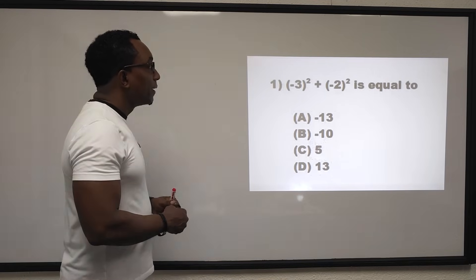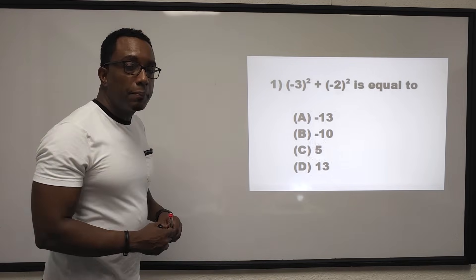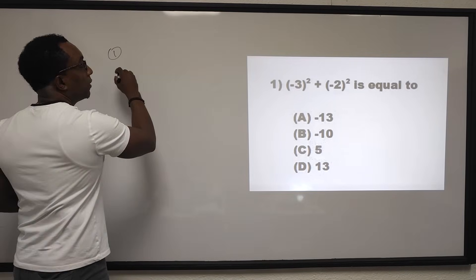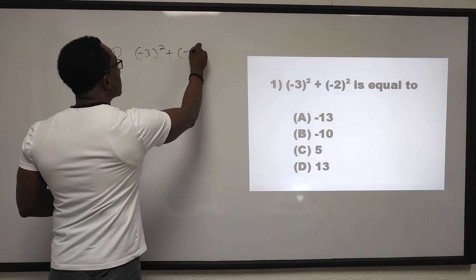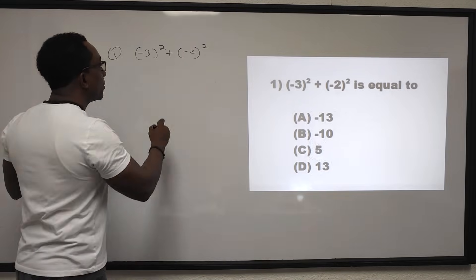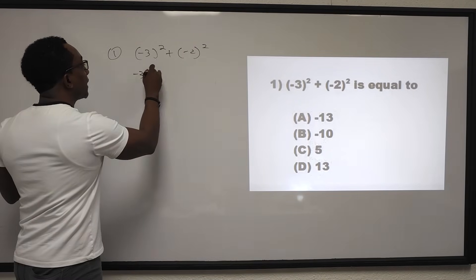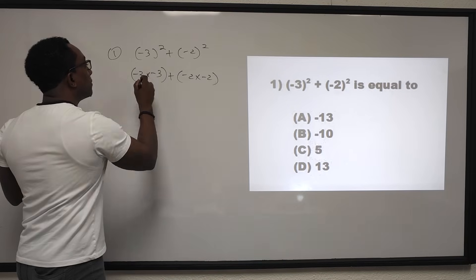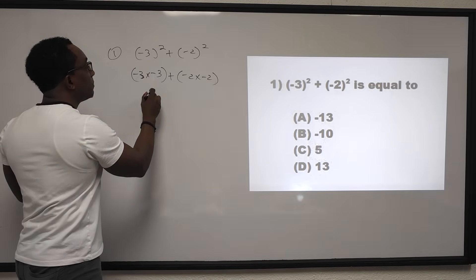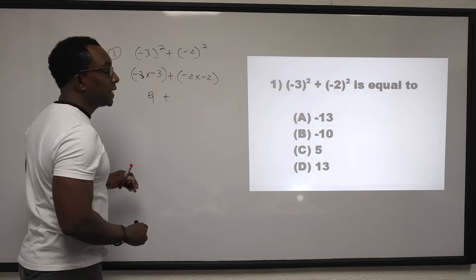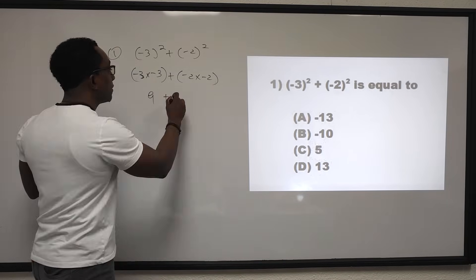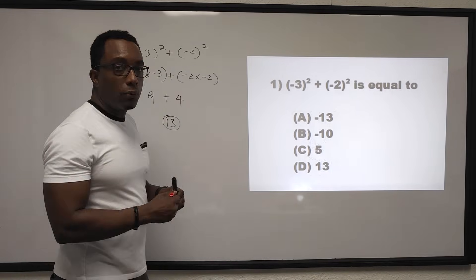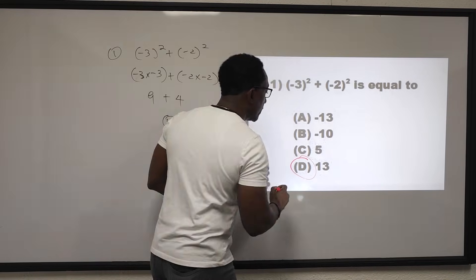Question 1C: negative 3 in brackets all squared plus negative 2 in brackets all squared. This is negative 3 by negative 3 plus negative 2 by negative 2. Negative 3 by negative 3 gives positive 9, plus negative 2 by negative 2 gives positive 4. And 9 plus 4 gives us 13. The answer for question 1 is D.